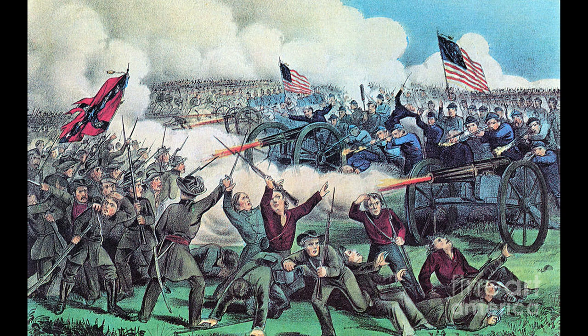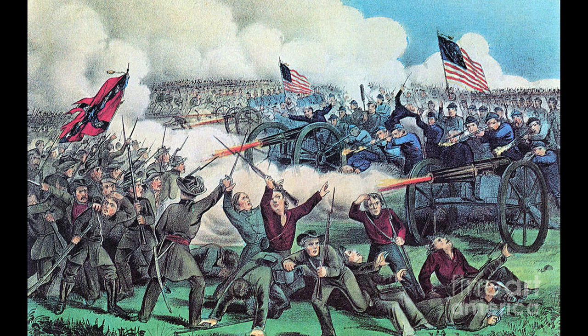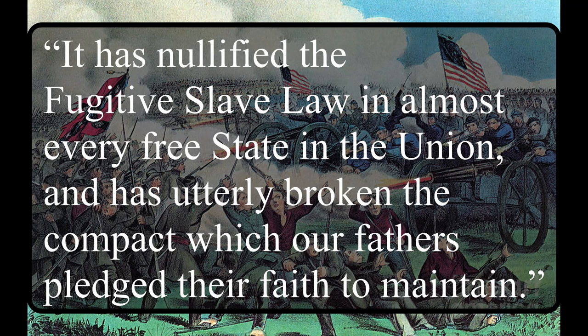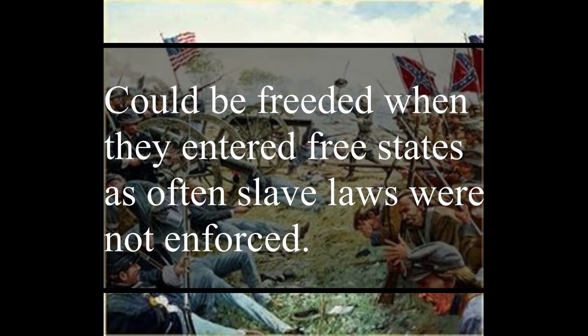To justify the slavery practiced in the U.S. — pure African slavery — they used racism. They stated: 'None but the black race can bear exposure to the tropical sun,' essentially arguing they needed enslaved people for that labor, using racism as justification rather than a root cause. Mississippi's statement also says: 'It has nullified the fugitive slave law in almost every free state in the Union, and has utterly broken the compact which our fathers pledged their faith to maintain.' This referred to how runaway slaves were effectively freed upon reaching northern states — technically they were supposed to be returned, but often they weren't, due to the views in those states, going against already established law.